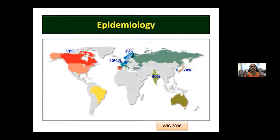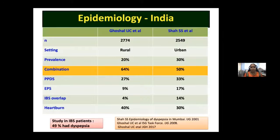Looking at the epidemiology: North America has a prevalence of about 30 percent, England 40 percent, Scandinavian countries 28 percent, India 30 percent, and Japan 24 percent — roughly 25 to 40 percent across the world. In India, two large studies show a rural prevalence of about 20 percent and urban prevalence of 30 percent. Importantly, a combination of postprandial distress syndrome and epigastric pain syndrome is far more common than either individual syndrome alone.